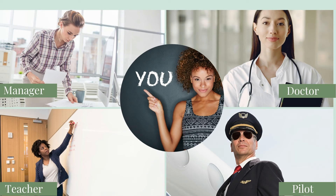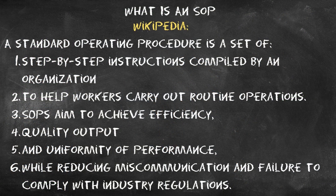Now let me give you a breakdown of what an SOP actually is. I found this definition from Wikipedia: a standard operating procedure is a set of step-by-step instructions compiled by an organization — or your firm, even if you're one person — to help workers or yourself carry out routine operations. An SOP aims to achieve efficiency and quality output, as well as uniformity of performance, while reducing miscommunication and failure to comply with industry standards.